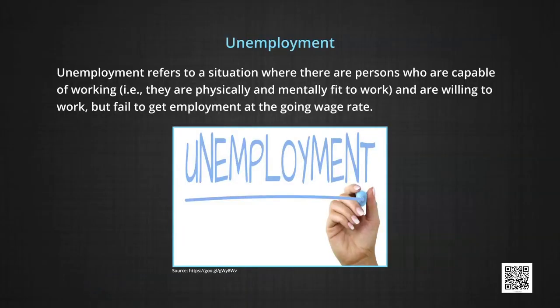The third point is unemployment. Unemployment refers to a situation where persons who are physically and mentally fit to work and willing to offer their services still fail to get employment at the going wage rate. The NSSO — National Sample Survey Organization — defines unemployment as a situation where those lacking work are not working but either seek work through employment exchanges, intermediaries, friends, relatives, or by applying to prospective employers, or express their willingness for work under prevailing conditions of work and remuneration. In other words, the unemployed are those ready to work at the going wage rate but unable to find jobs.